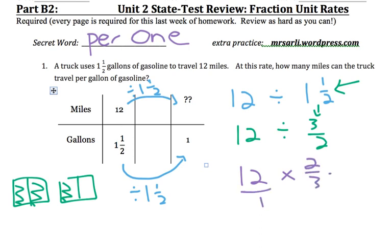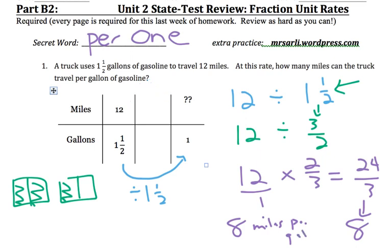To multiply that now, we just have 12 times 2 is 24, and 1 times 3 is 3. And then 24 thirds, that's like 24 divided by 3, which is 8. And that's why the answer here is 8 miles per gallon. And you really want to stop and say, does my answer make sense here? And it really does, because 1.5 gallons went 12 miles. And 1 gallon, it would make sense that that would be less than 12, just by a little bit. And it ends up being 8 miles for that 1 gallon.